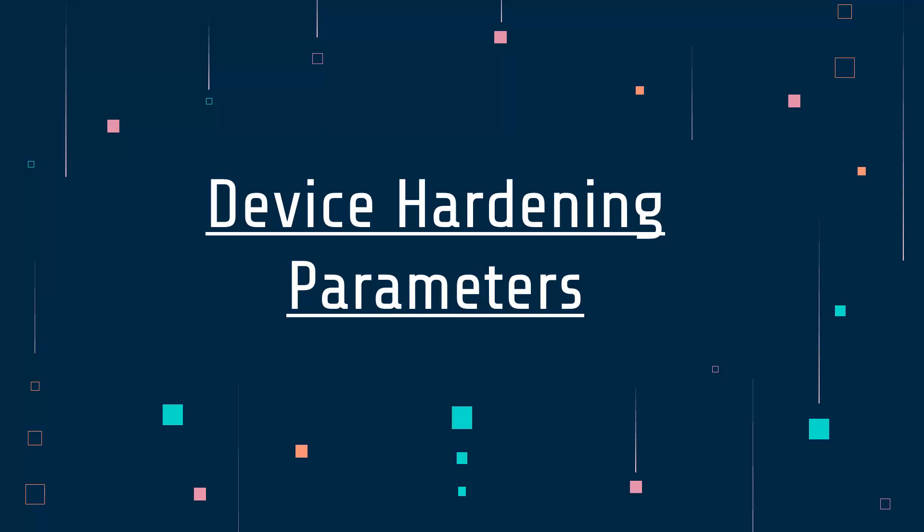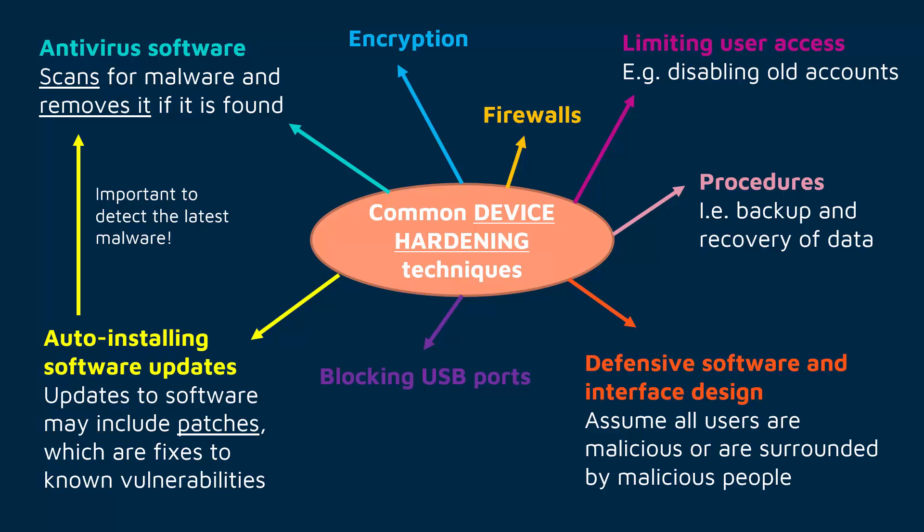I'm going to talk about what is meant by the phrase 'device hardening parameters' and how it relates to policies. We've talked before in a previous video, linked in the description, about device hardening and the different techniques which fall under it. Device hardening is where you're trying to make sure your device has enough layers of security, making it as hard as possible for an attacker to break through, by adding more and more different techniques in a layered fashion.